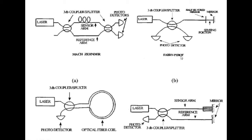The Fabry-Perot technique: a single laser source with splitter or coupler is there. The laser source goes directly and hits a mirror. It will replicate — striking the mirror means the light source reflects back through the same cable. In the coupler unit, you couple two photo detectors.